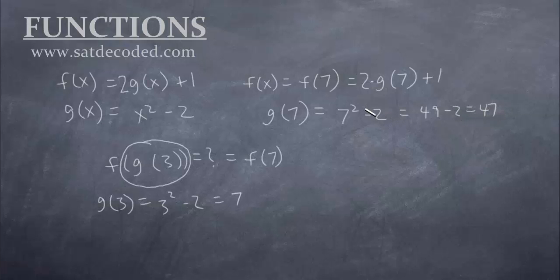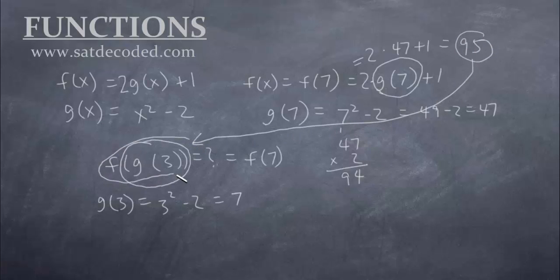So this 47 we can replace right here. So this whole thing just equals 2 times 47 plus 1. And if you have a calculator you can calculate what 2 times 47 is. I don't have a calculator, so I'm just going to do it by hand. So 94 plus 1 equals 95. And that is our final answer to our original question, f(g(3)).